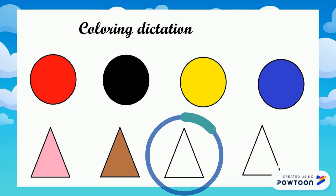Now please show me the color green. Triangle number 3 is green. Let's color triangle number 3 green.